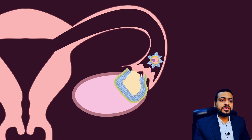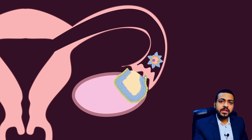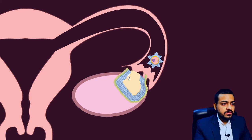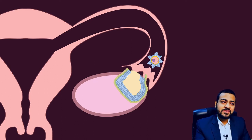During the process of ovulation, the secondary oocyte is released from the follicle into the peritoneal cavity. As the follicle and the ovarian wall ruptures, the secondary oocyte is released into the peritoneal cavity, but fortunately it does not fall into the peritoneal cavity.